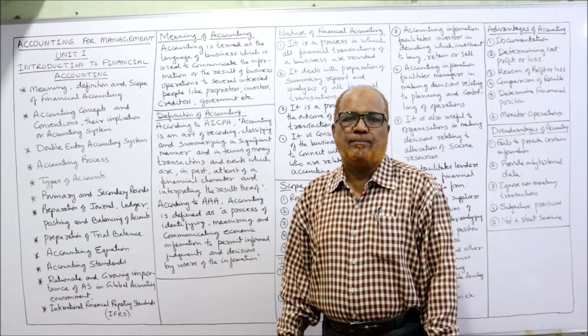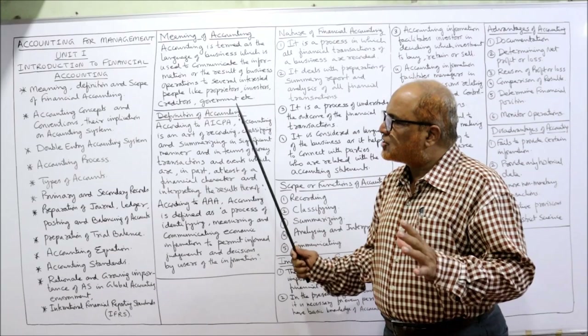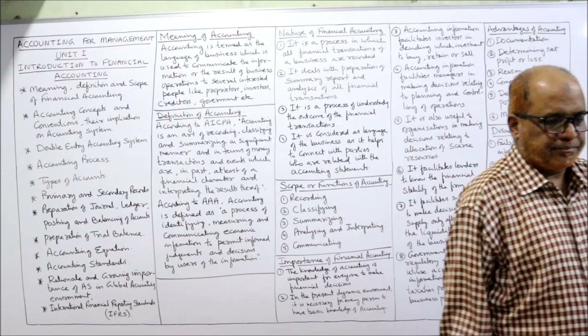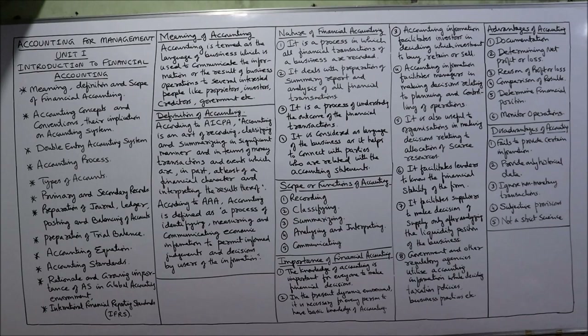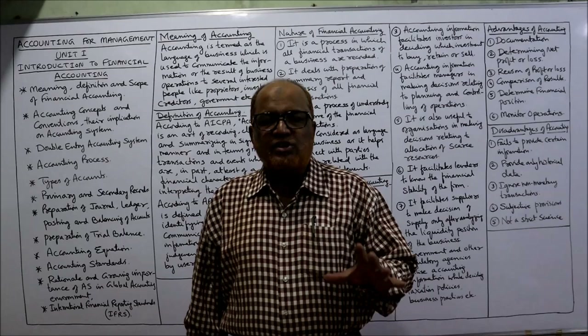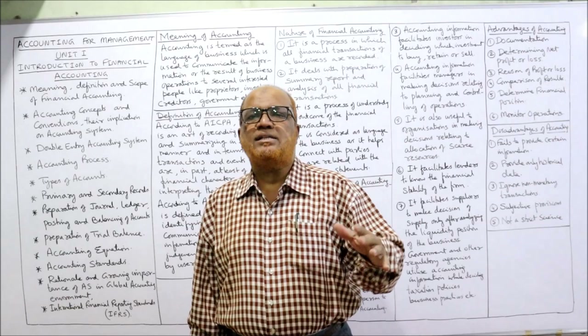Before explaining further, take a screenshot of the points I have written on the board, then I'll explain all the points in detail. Now I am going to explain the meaning, definition, scope, nature, importance, advantages and disadvantages of financial accounting.